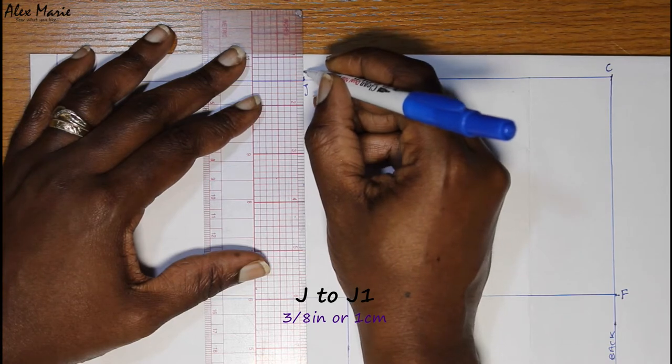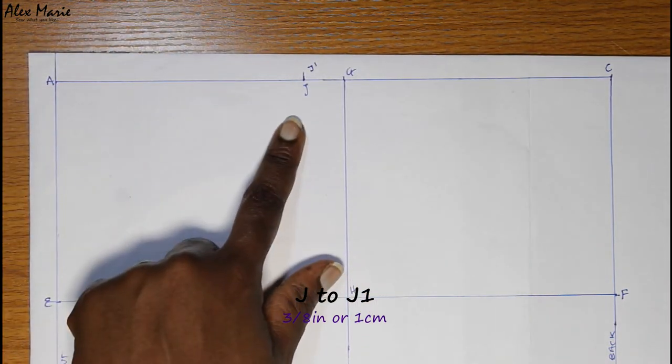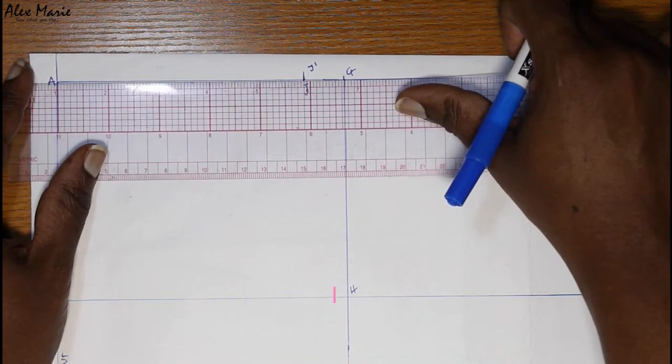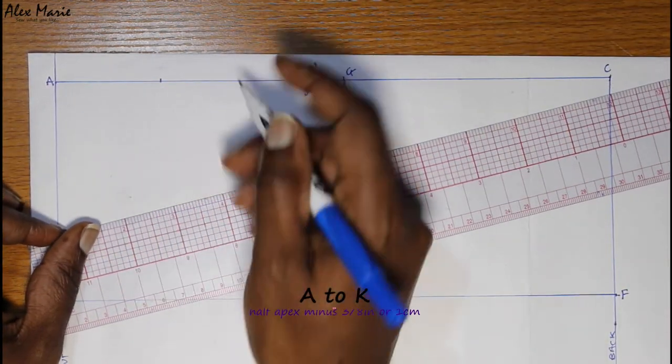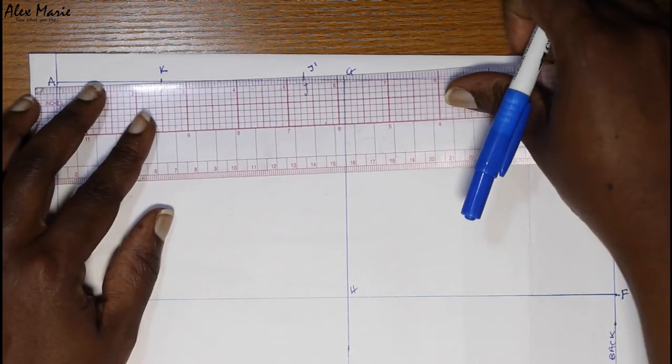From point J we're just going to square up a slight amount of three-eighths of an inch or one centimeter to create some shaping on the side. A to K, we'll put in our half apex minus one centimeter or three-eighths of an inch. K to L, put in your dart.